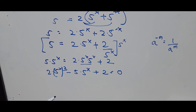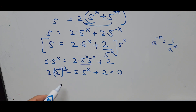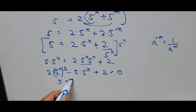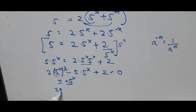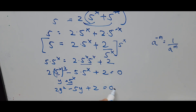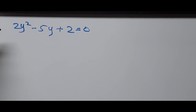Let's introduce another variable to represent 5 to the power x. Let y equal 5 to the power x. Substituting these values into the equation, this is now 2y squared minus 5y plus 2 equals 0. From here we can solve for the value of y by using factoring or the quadratic formula.